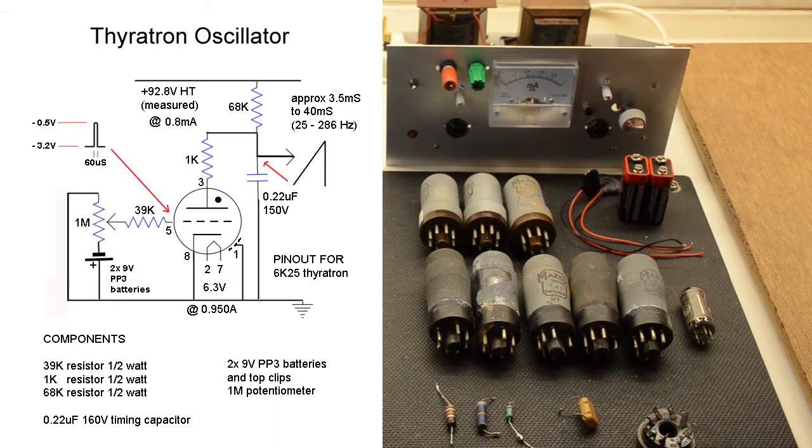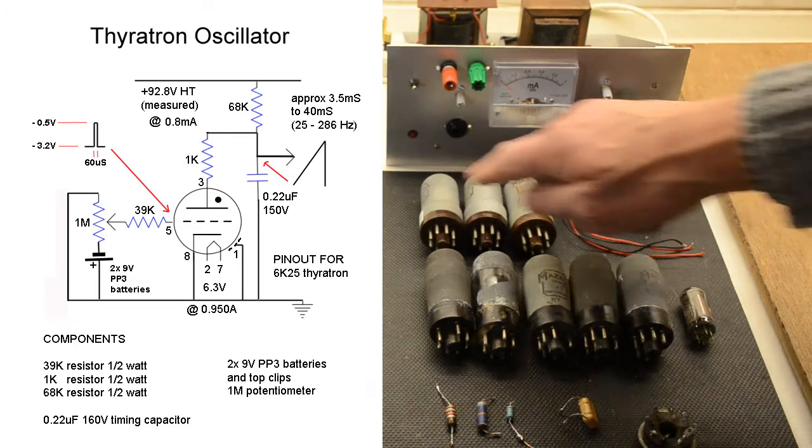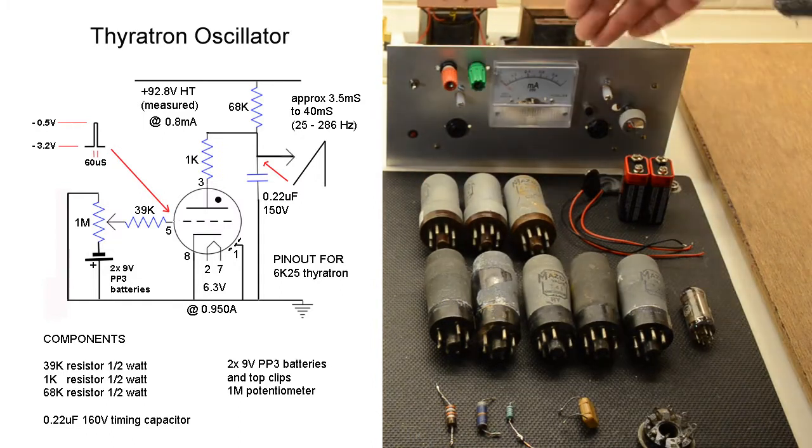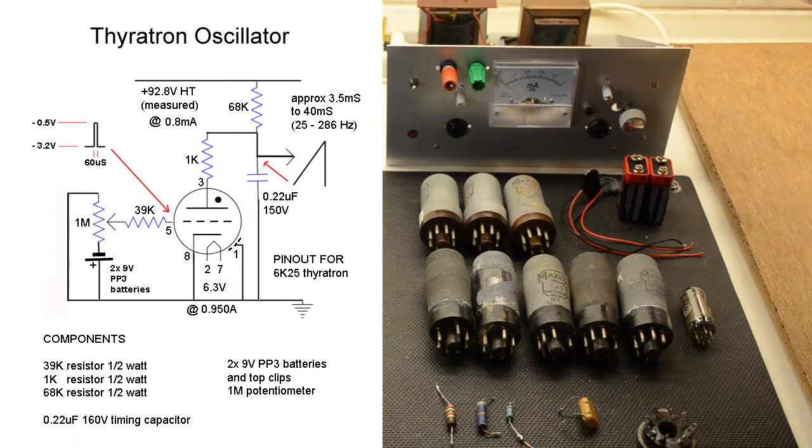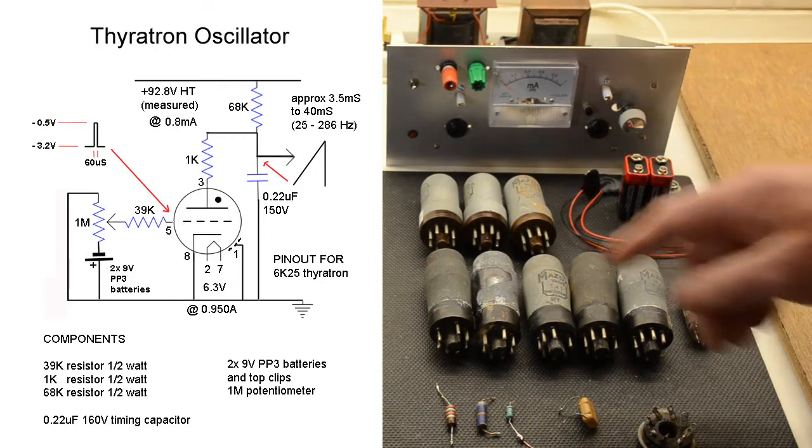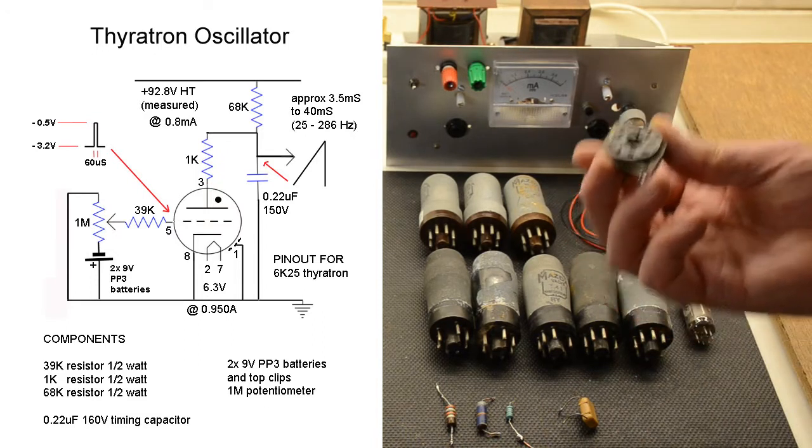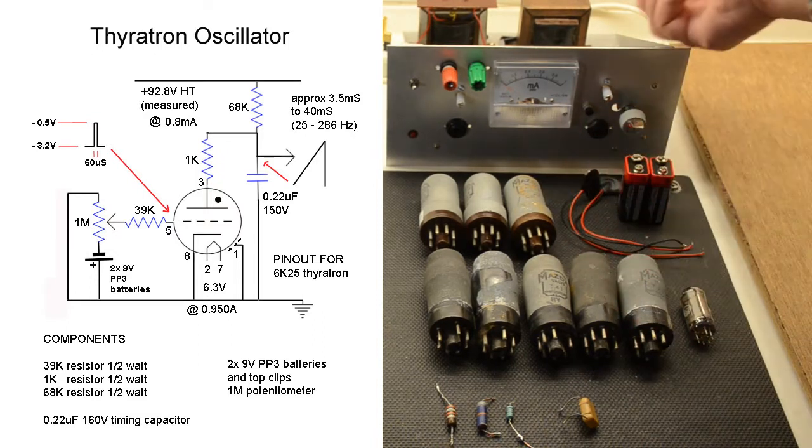The thing to bear in mind though is the CK25, this particular one, uses an international octal socket. So we can plug those straight into the socket on our chassis here. If you want to use a T41 you have to swap that socket for this one because this is a Mazda octal. It's slightly different, only slightly,